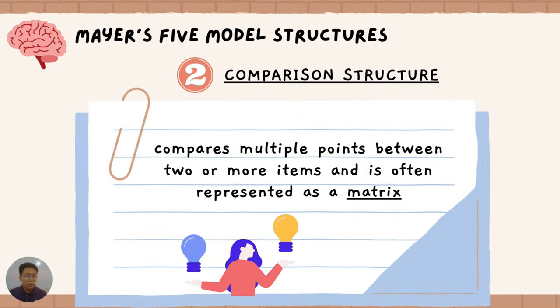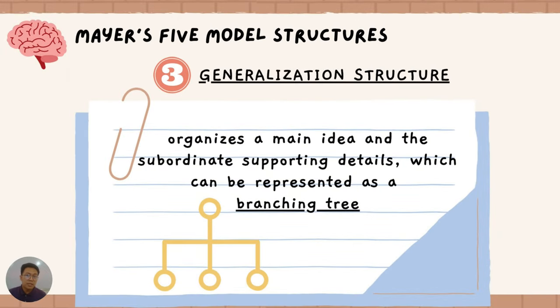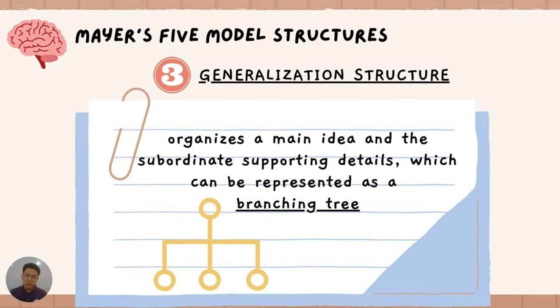Another structure we can use is called the comparison structure, which compares multiple points between two or more items and is often represented as a matrix. So you can use an advantages and disadvantages matrix or a rubric matrix. We can also use the generalization structure, which organizes our main idea and supporting details and can be represented as a branching tree — a deductive method going from the general to the specific.